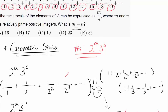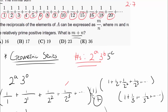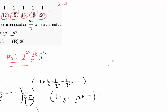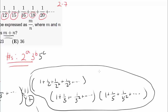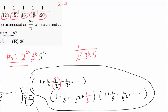The extension to include powers of 5 is straightforward — we simply multiply by another geometric series: 1 plus 1/5 plus 1/25 and so on. To verify: to get 1 over (2 squared × 3 cubed × 5), we pick the appropriate terms from each of the three series. Every element of A can be obtained by multiplying these three expressions.